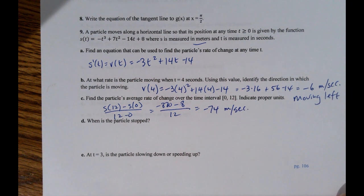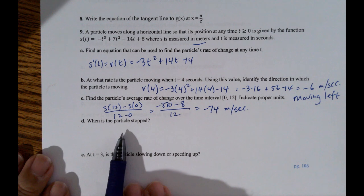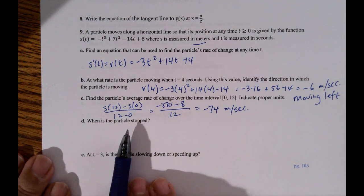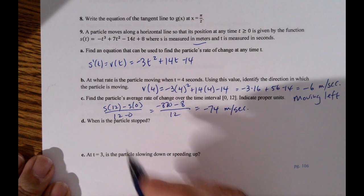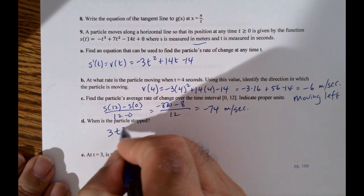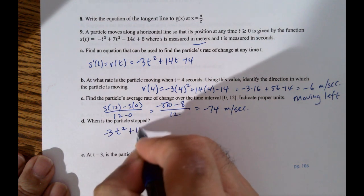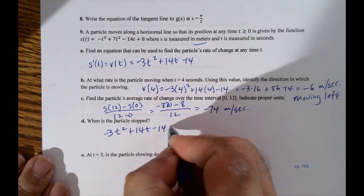When is the particle stopped? So particle is stopped when the velocity is 0. So all we do is set that equal to 0. So that's negative 3t squared plus 14t minus 14 equals 0.